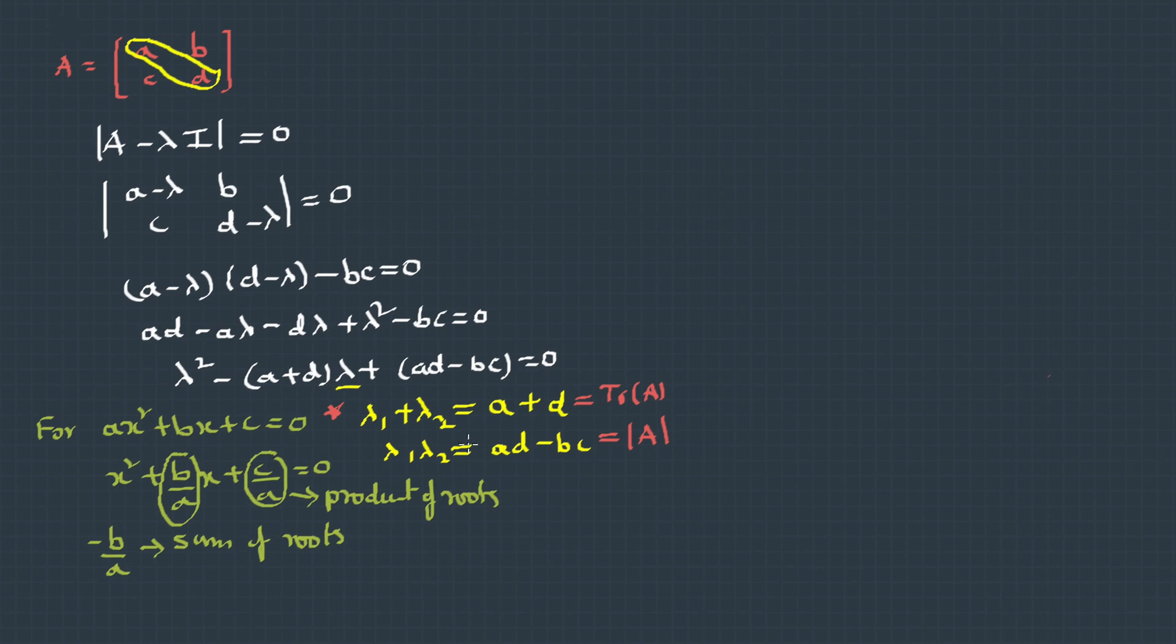This is a very important observation. This can be extended for 3 by 3 matrix as well, and even for any n by n matrix. So let's make a note of this. The first observation is the sum of roots, that is sigma lambda, is the trace of the square matrix. On the same lines, the product of the roots is the determinant of the matrix. Now think for a second, when does the determinant become 0? It becomes 0 only when one of the roots becomes 0. Therefore, if the determinant of the matrix is 0, that is if the matrix is singular, then one of the eigenvalue is 0.